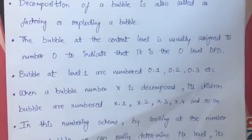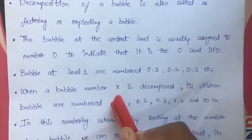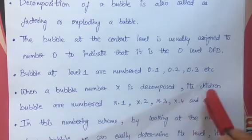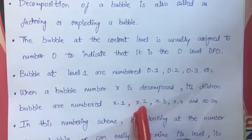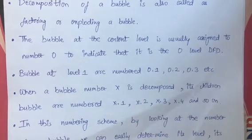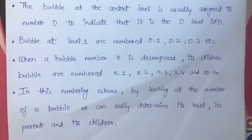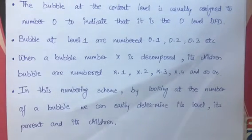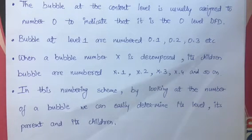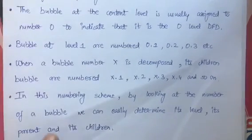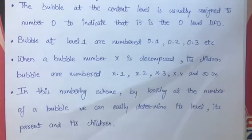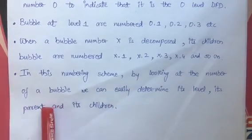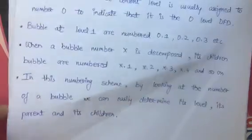When we number the process and expand it, the children will be numbered x.1, x.2, x.3, and so on. In this way, you need to number your process. To make it more clear, if you look at the DFD, anyone can understand which process we are talking about, which level it is placed on, and how you divided it. We need to get an idea from numbering — it tells us about the level, parents, and children. Numbering is an important thing.